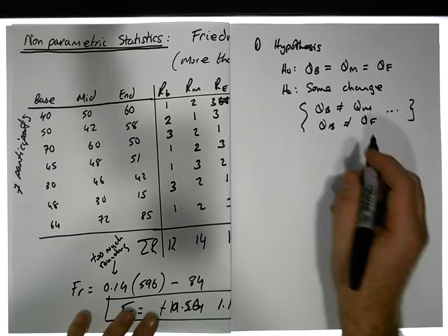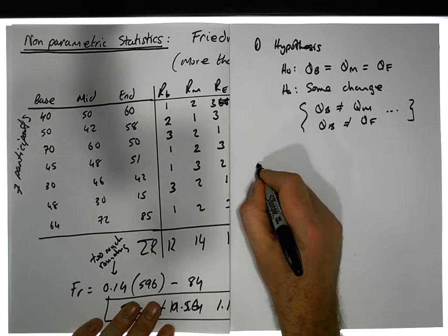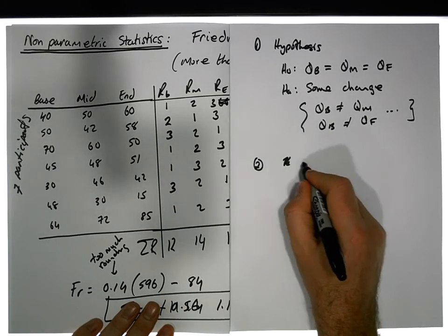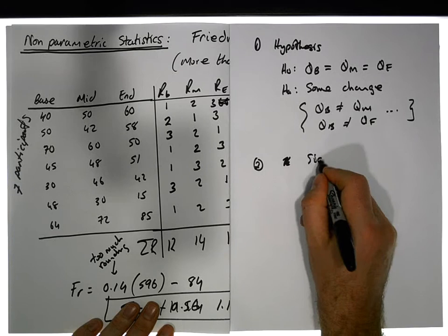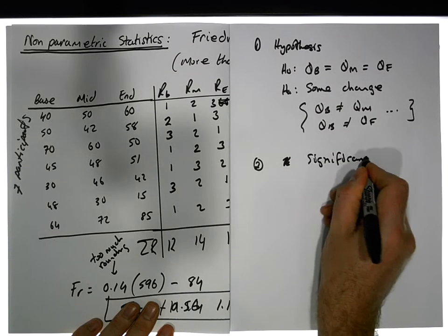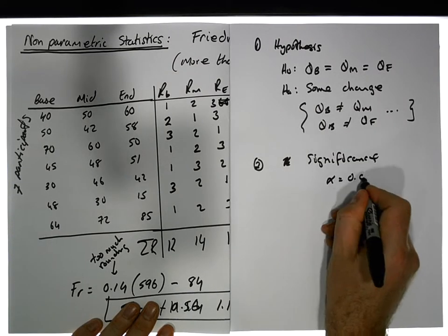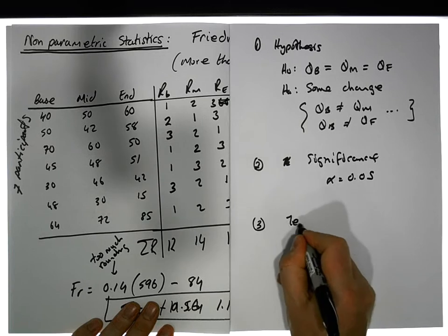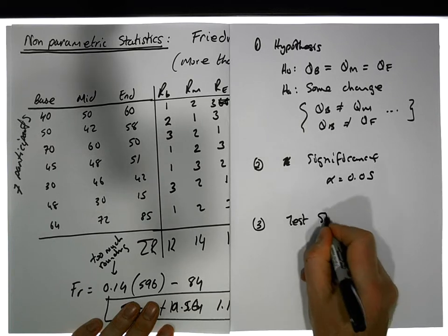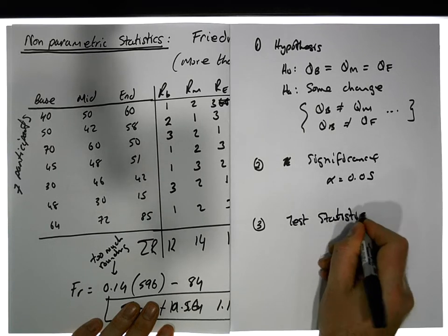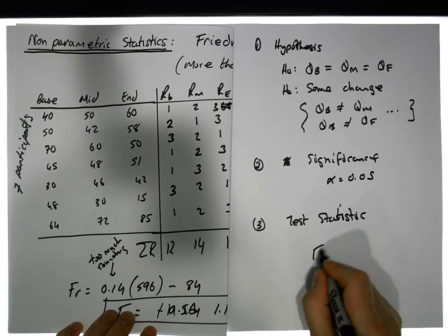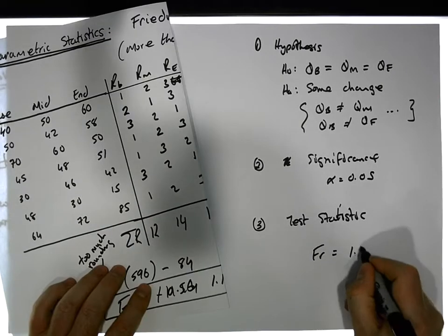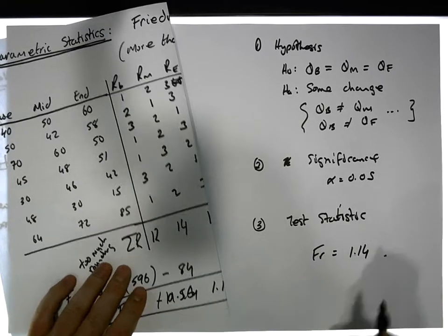Stage two is the significance level. We'll set alpha equal to 0.05. Stage three is the test statistic — we've already calculated it: Fr is equal to 1.14.